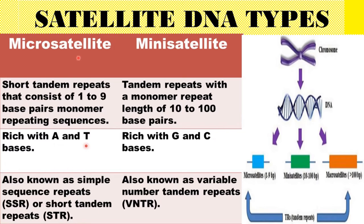Microsatellite is also known as simple sequence repeat, which is why we use it as a simple sequence marker. Microsatellite can also be called SSR or STR — that is, simple sequence repeat or short tandem repeat. Minisatellite is known as variable number tandem repeat, or VNTR.